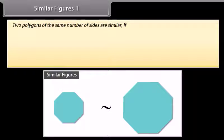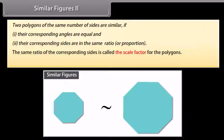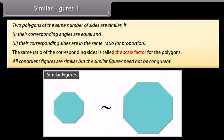Two polygons of the same number of sides are similar if: one, their corresponding angles are equal, and two, their corresponding sides are in the same ratio or proportion. The same ratio of the corresponding sides is called the scale factor for the polygons. All congruent figures are similar, but similar figures need not be congruent.